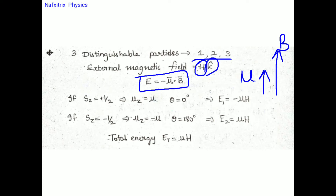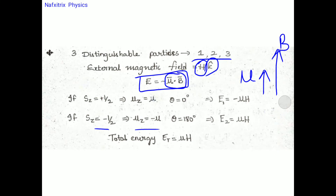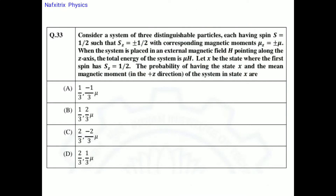When sz = −1/2, μz = −μ. The magnetic field is in the positive z-direction while the magnetic moment is in the negative z-direction, so the angle θ = 180°. The dot product μ·B is negative, giving energy E = +μH. These are the two possible energies: E1 = −μH and E2 = +μH. The total energy given in the question is μH.